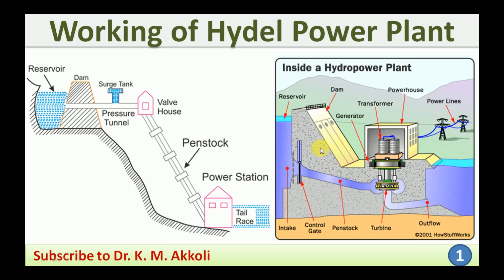Whatever natural flow of water there is through the river is stopped by using a dam. The dam is a wall constructed to stop the water and store it in the reservoir. The stored water is called the reservoir. When water is stored in the reservoir it will have a certain head — the vertical distance of the water — and as the head increases, the potential energy increases.